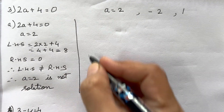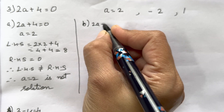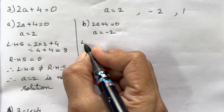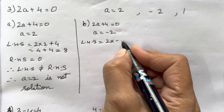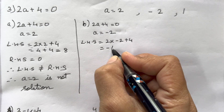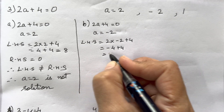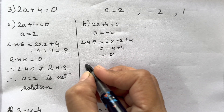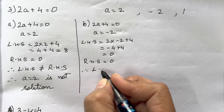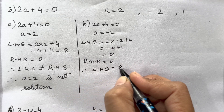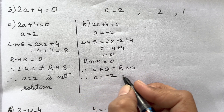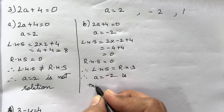Next substitution: 2a + 4 = 0 with a = -2. Left Hand Side is 2 × (-2) + 4 = -4 + 4 = 0. Right Hand Side is also 0. Therefore Left Hand Side equals Right Hand Side, and therefore a = -2 is the solution.